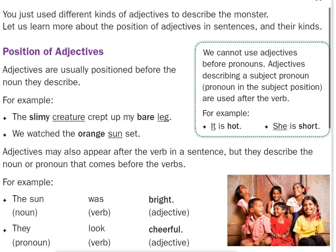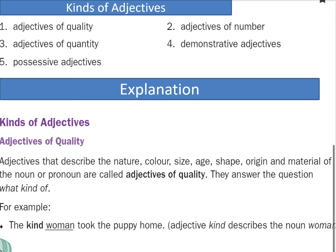Now we are going to see about the kinds of adjectives. There are five kinds: adjectives of quality, adjectives of quantity, possessive adjectives, adjectives of number, and demonstrative adjectives. Let us see all these five kinds in detail. Adjectives that describe the nature, color, size, age, shape, origin, and material of the noun or pronoun are called adjectives of quality.